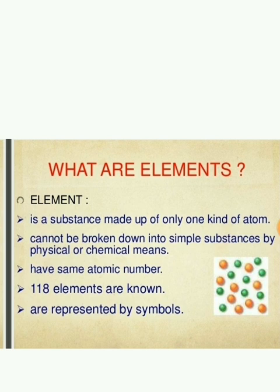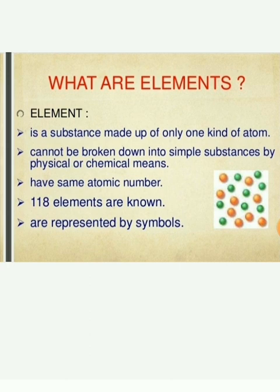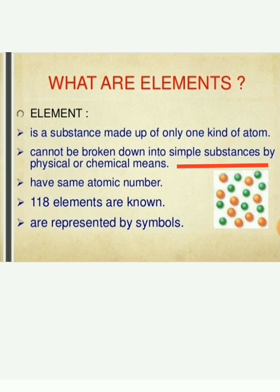Element is a substance made up of only one kind of atom. For an element, we need only one kind of atom — every atom has the same property. That type of atom group we call as element. Elements cannot be broken down into simple substances by physical or chemical means.